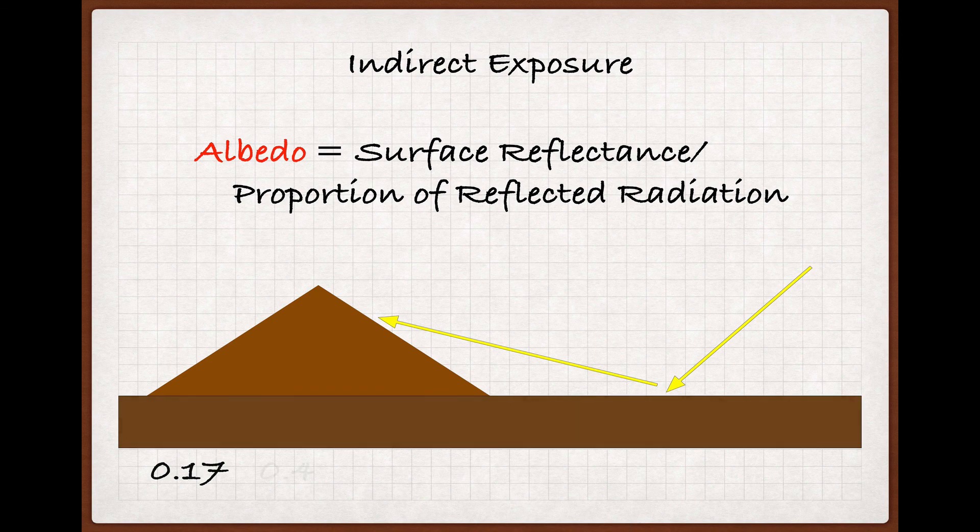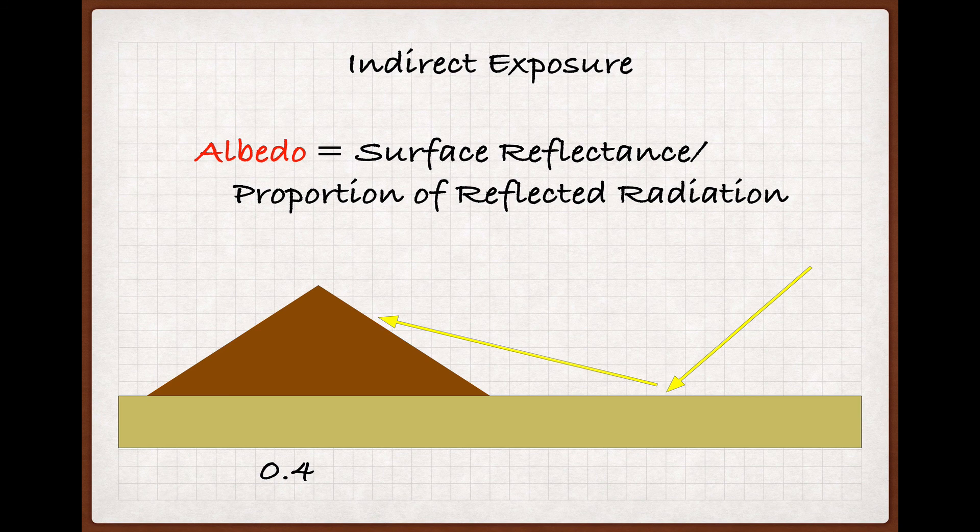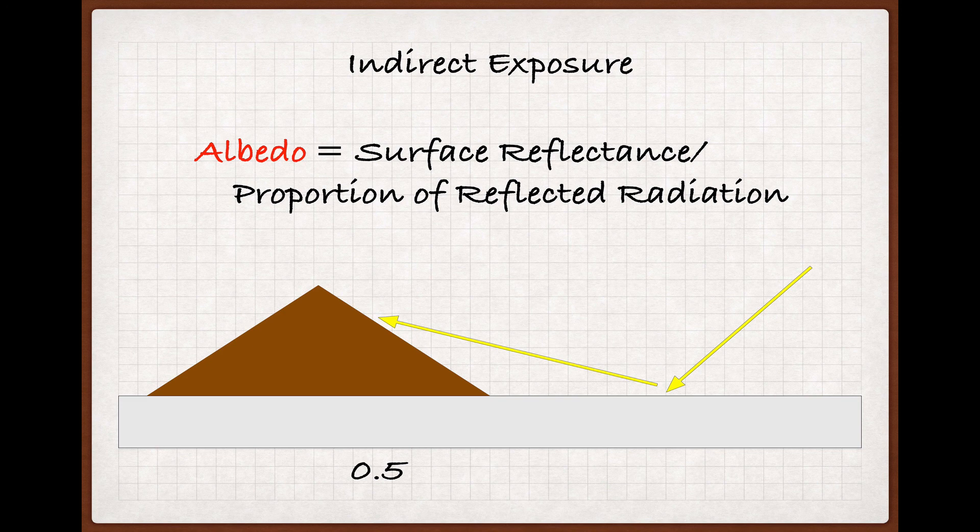very sandy soils will have an albedo closer to 0.4, and very chalky soils, like the albariza soils found in the Jerez region of southern Spain, clock in at around 0.5.